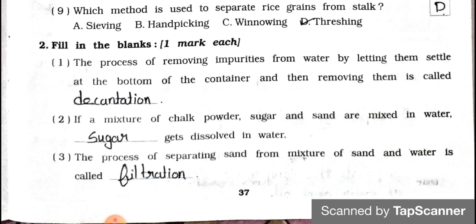Now see Main Two — Fill in the blanks, one mark each. Number one: The process of removing impurities from water by letting them settle at the bottom of the container and then removing them is called decantation. Number two: If a mixture of chalk powder, sugar, and sand is mixed in water, sugar gets dissolved in water.